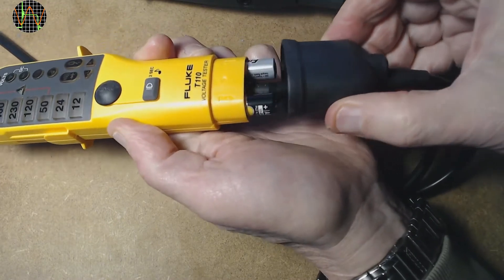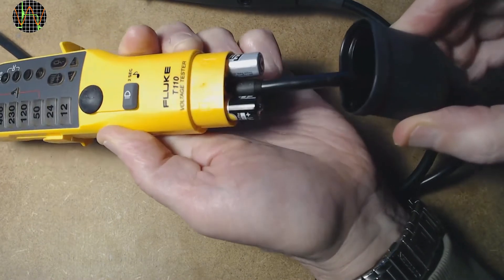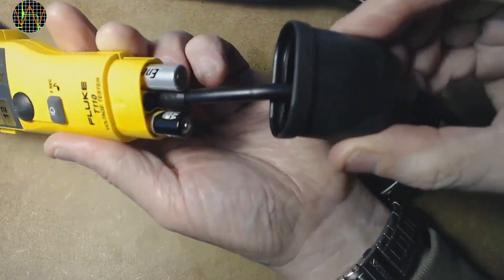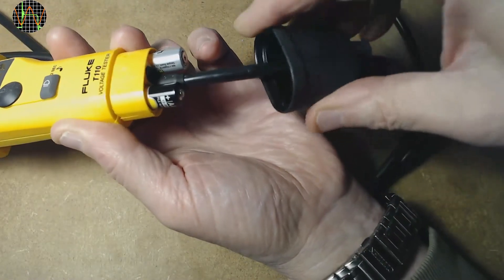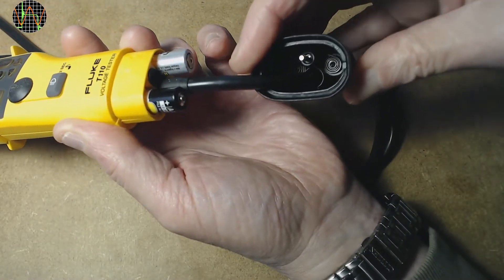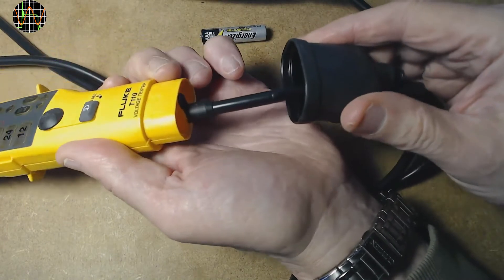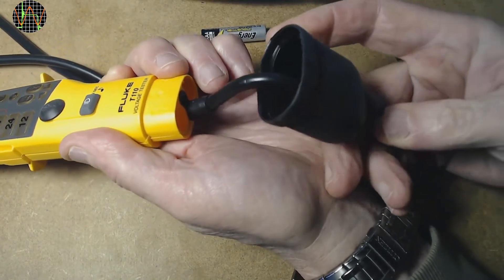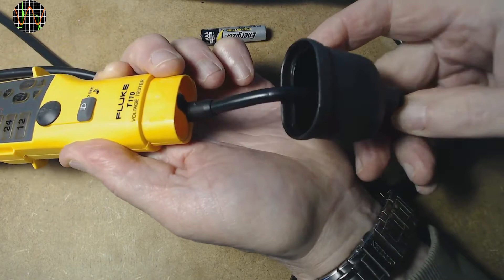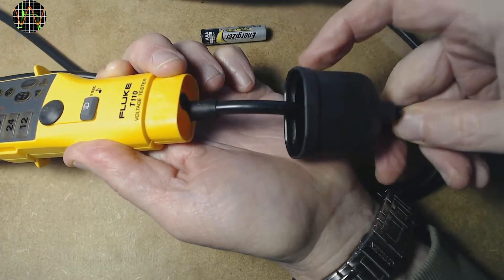Apparently there is an issue with the strain relief of the connecting cable which can cause the tester to fail intermittently to detect dangerous voltages. Also, Fluke detected that the cable itself may fail under repeated bending stresses far earlier than what they consider an acceptable useful life.